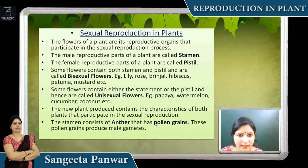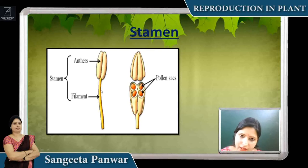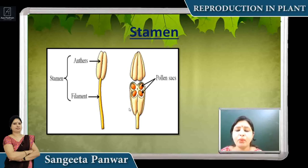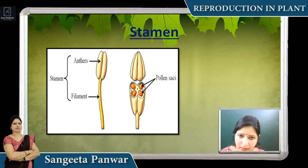The stamen consists of the anther. The male part — the stamen — has pollen grains in the anther. Look at the picture — this is the picture of the stamen. The stamen has two parts: the anther and the filament. Inside the anther, there are pollen sacs, and inside the pollen sacs are pollen grains in powdery form. These pollen grains are the male gametes.